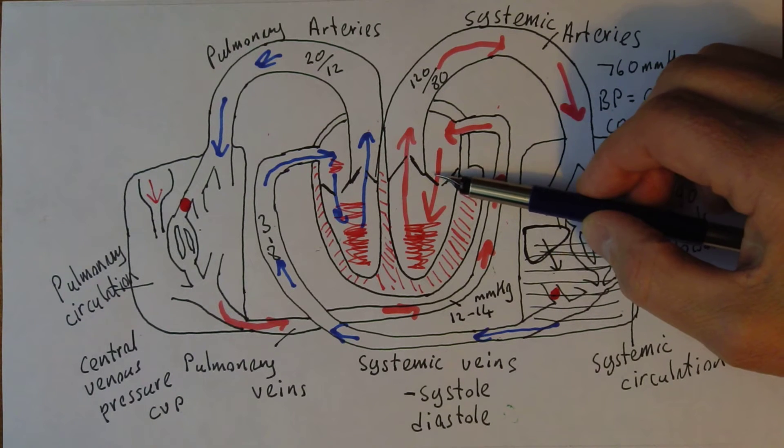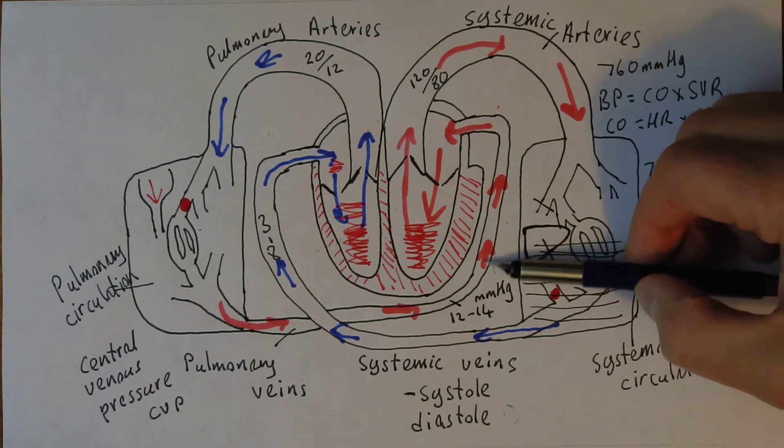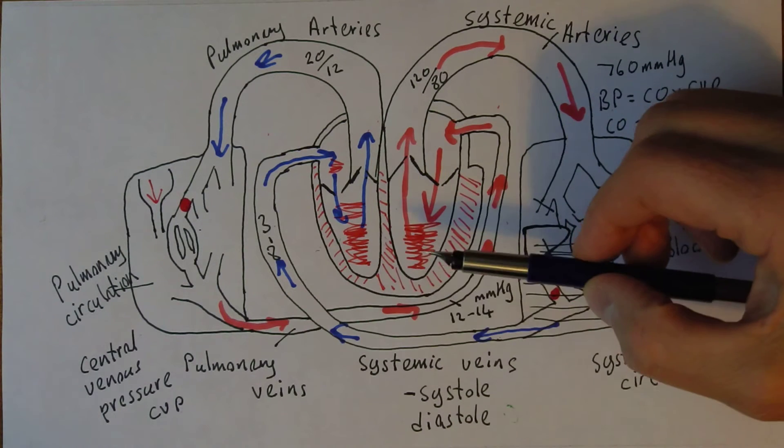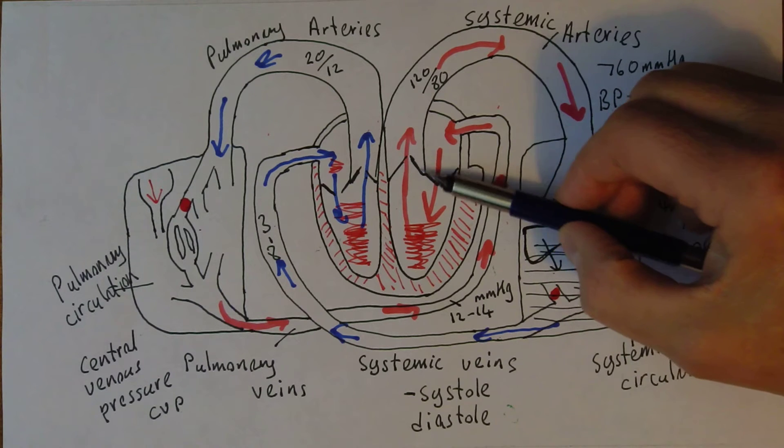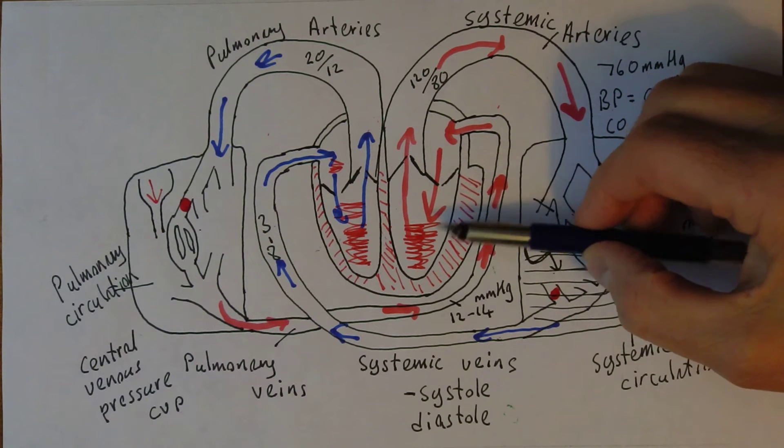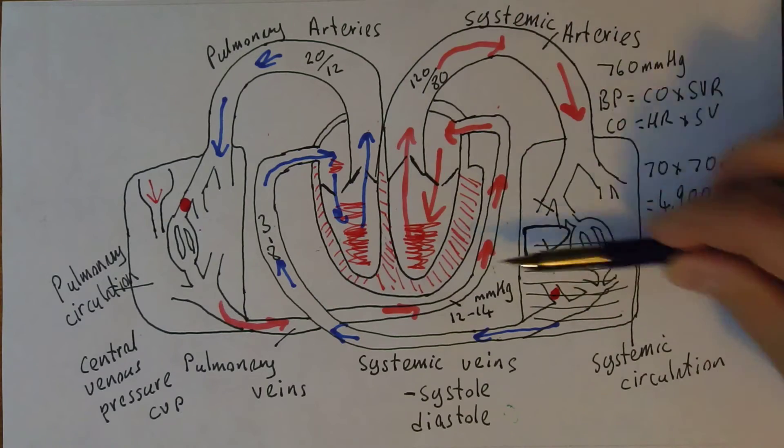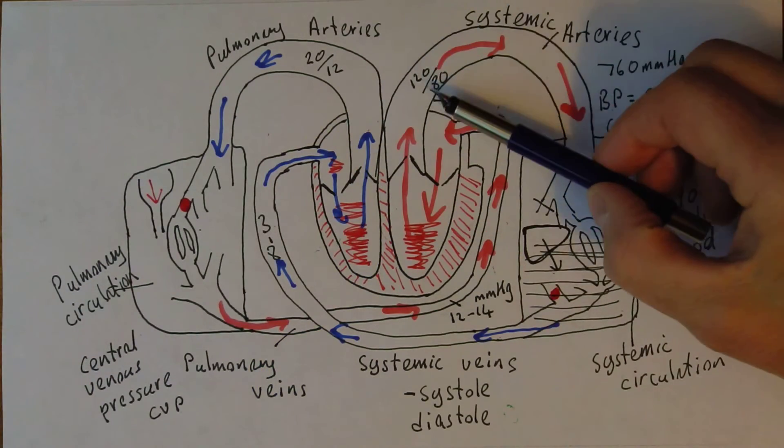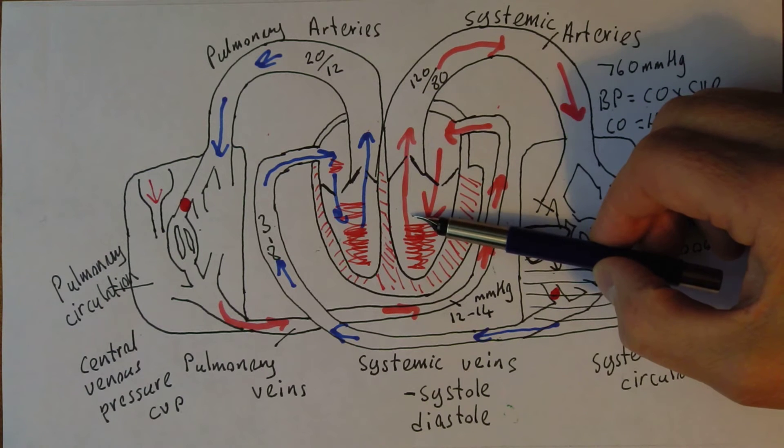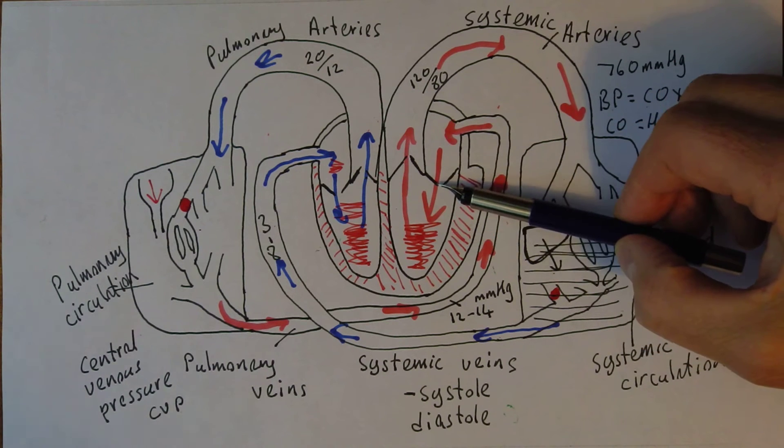So failure of the mitral valve would lead to pulmonary venous hypertension. As would failure of the aortic valve. After ventricular systole the aortic valve would normally close to prevent regurgitation of blood from the aorta back into the left ventricle. So failure of each of those valves would be a problem.